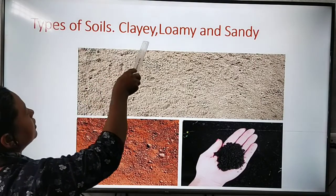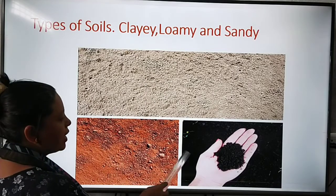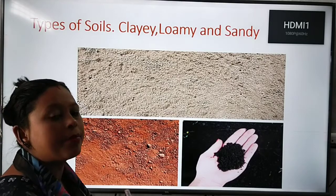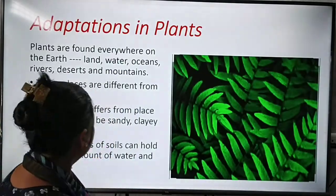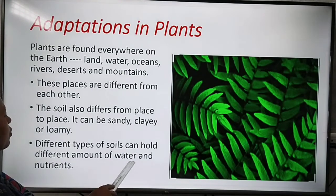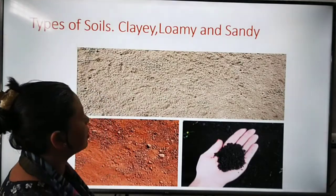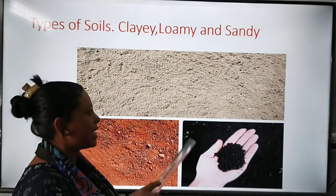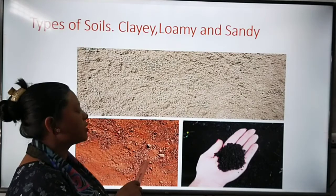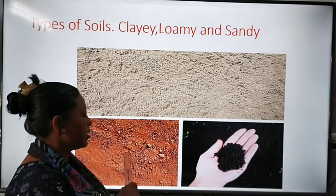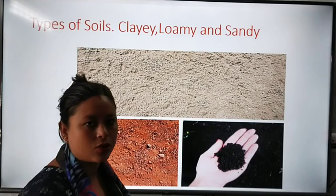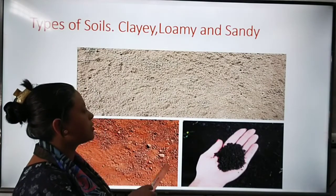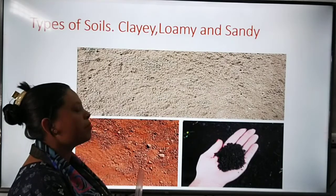Let's have a look at the types of soil: clay, loamy and sandy. This is sandy soil, this is clay soil and this is loamy soil. Different types of soils can hold different amounts of water and nutrients. Sandy soil is a mix of sand and clay. In clay soil, the particles are tightly packed when wet. Loamy soil is a fertile soil — it is good for crops and plants.